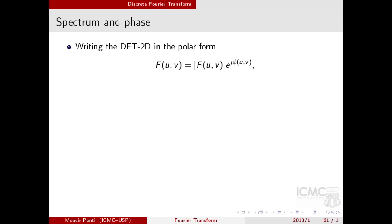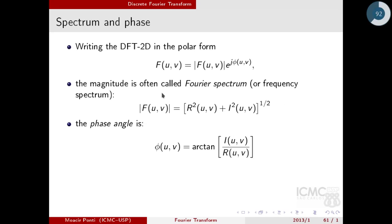I can write the DFT 2D also in its polar form, as we already seen for the 1D case. Also, I can compute the magnitude, which is often called the Fourier spectrum, and the phase angle similarly. The power spectrum, which is the magnitude squared, is often used to visualize.